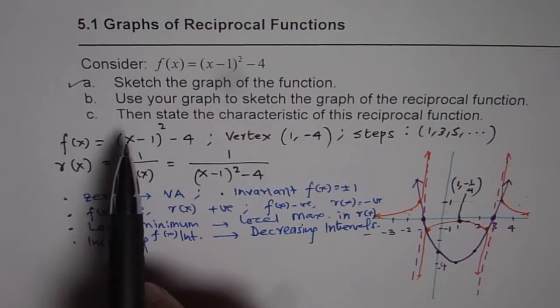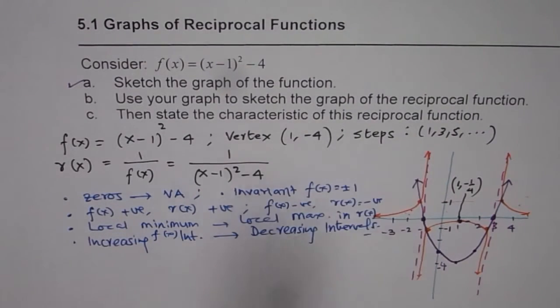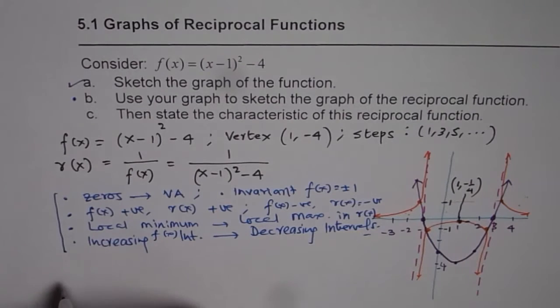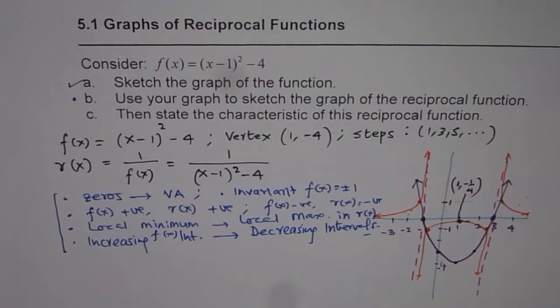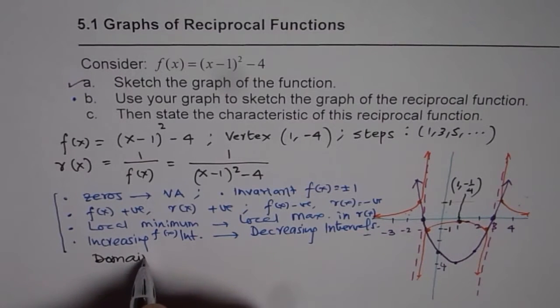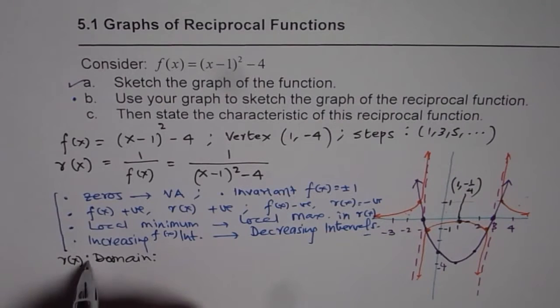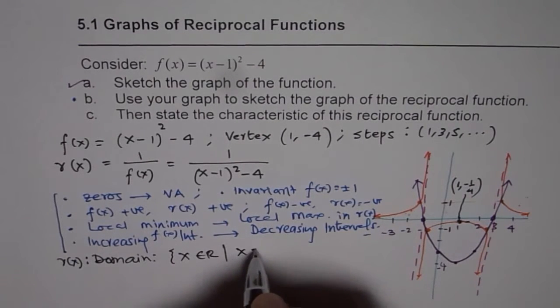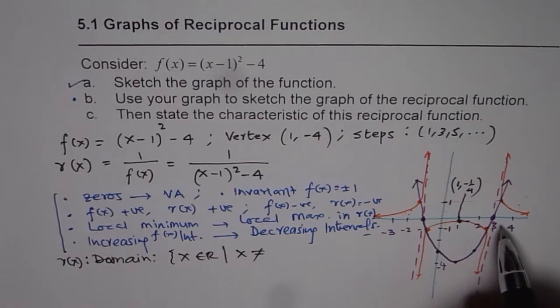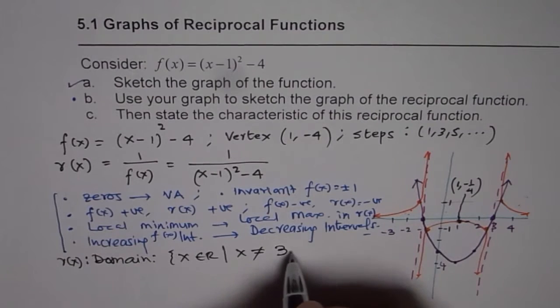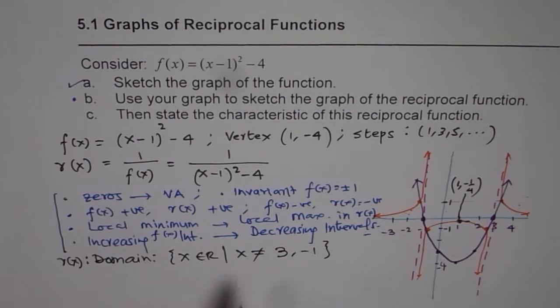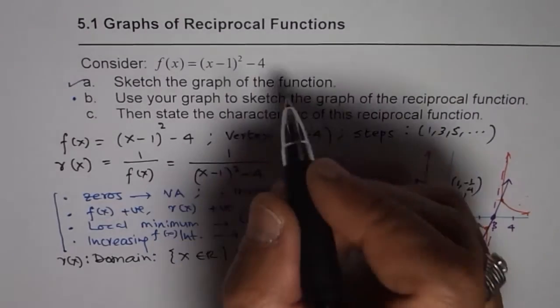Now let's state the characteristics of this reciprocal function. First, domain and range. The domain is all real numbers except the vertical asymptote points, which are at x = 3 and x = -1. These are the zeros of the function.